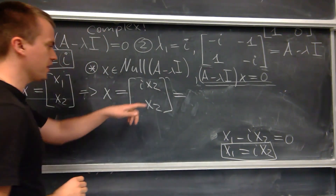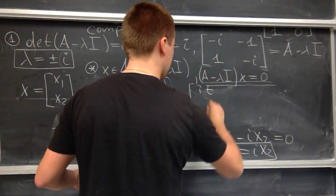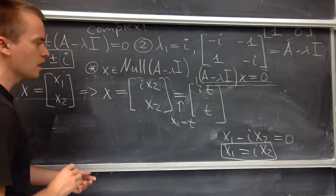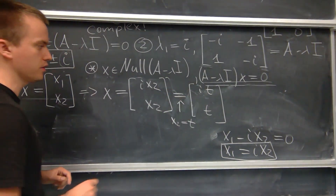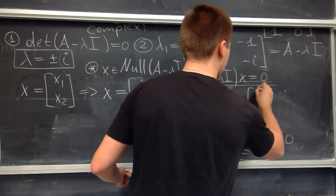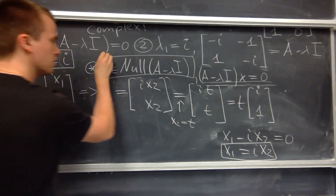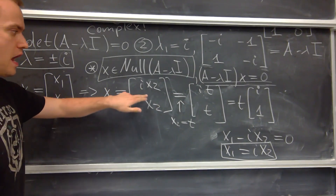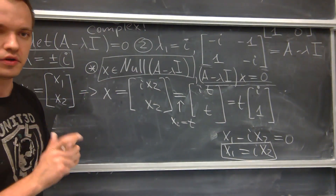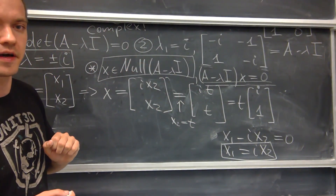I can think of x2 as a free parameter t, so let x2 equals t. Then x equals i·t, t. Factoring out the scalar t, I get x equals t times the vector i, 1. The nullity is one-dimensional and the basis of this eigenspace — the eigenvector corresponding to lambda equals i — is the vector i, 1.